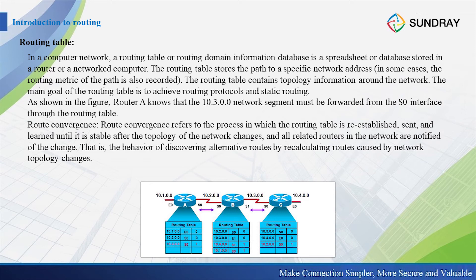We can see in the diagram that there are three routers, and each router has a routing table. When a packet enters the router through the E0 port, it will look up the routing table and transfer the packet to router B. When the traffic arrives at router B, according to its routing table, it can be transferred to router C.